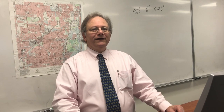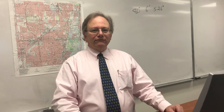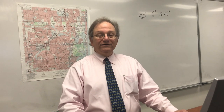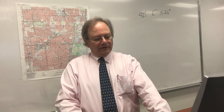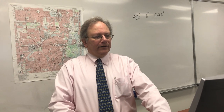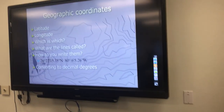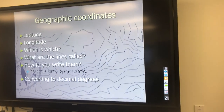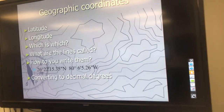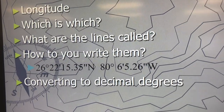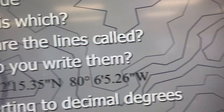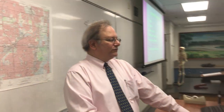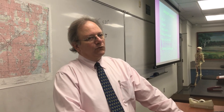Now we're going to convert degrees, minutes, and seconds of latitude or longitude to decimal degrees, which are more appropriate for inputting into computer programs. So if you look at the presentation on slide 2, you'll see in black typeface: 26 degrees, 22 minutes, 15.35 seconds north, and 80 degrees, 6 minutes, and 5.26 seconds of west longitude.